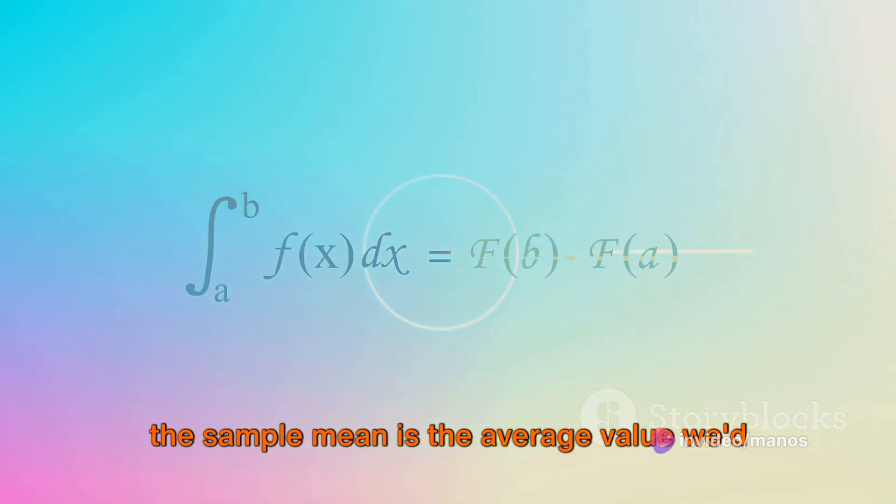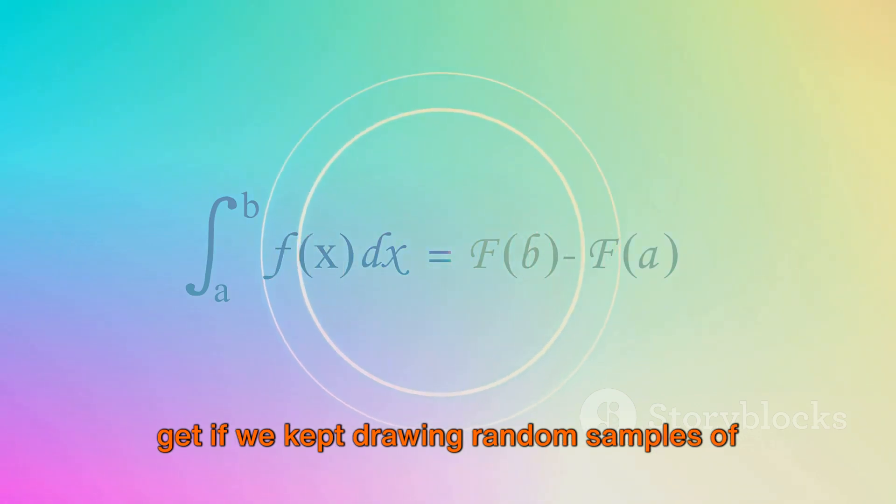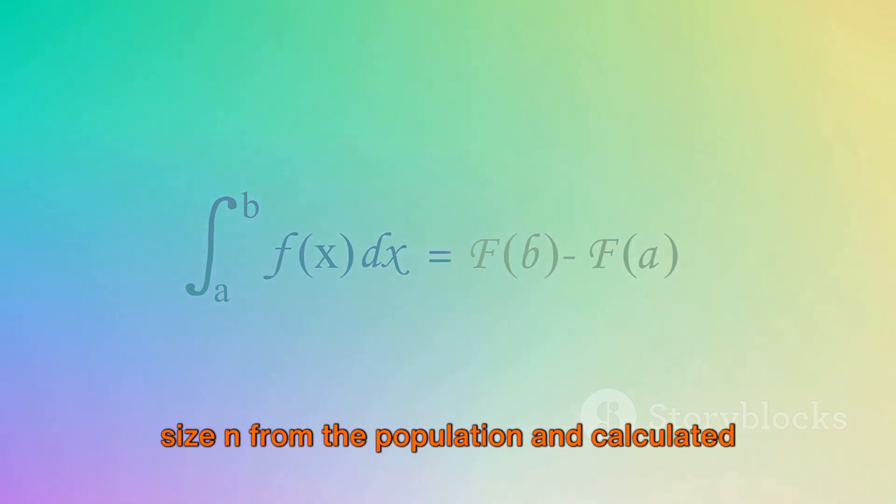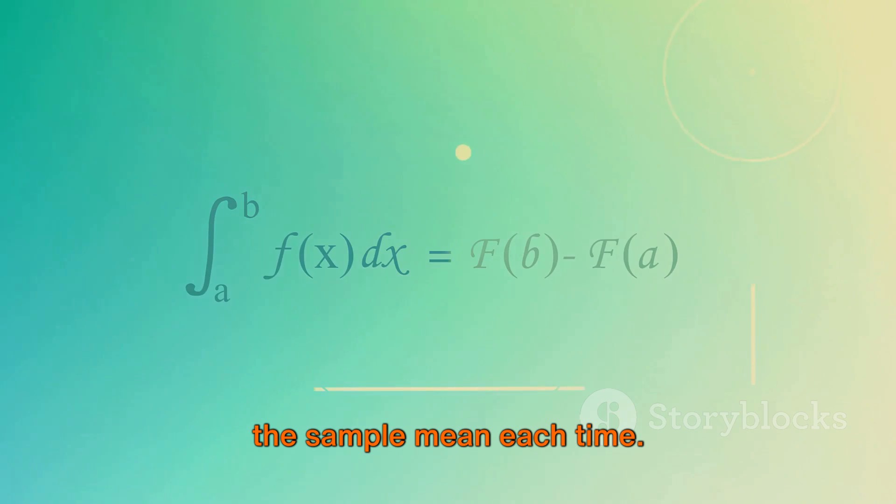In this context, the expected value of the sample mean is the average value we'd get if we kept drawing random samples of size n from the population and calculated the sample mean each time.